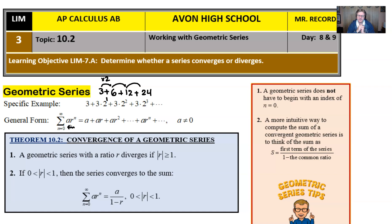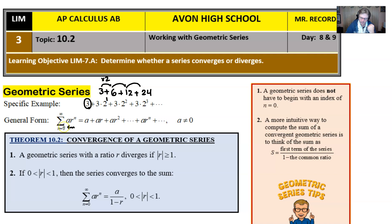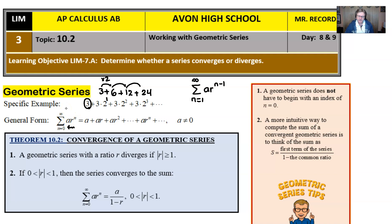Quite often your geometric series are going to start at zero, and the reason why we want that is so that we can retain this nice a·r^n form, since r to the zero is just one. Now, if you want to start at n equals one, you can adjust and make it r raised to the n minus one. But a lot of times we like this clean look of a times r to the n. Note that a can't be zero, because then you really don't have much of a sequence.